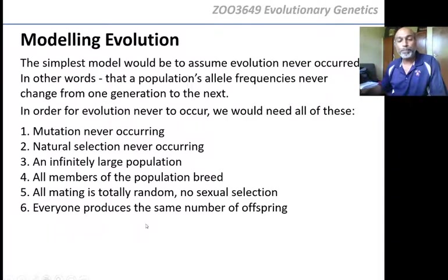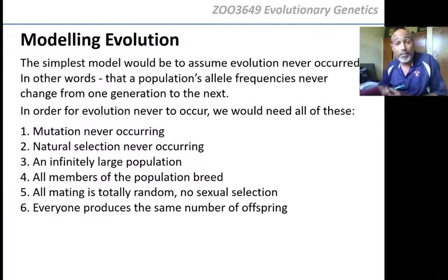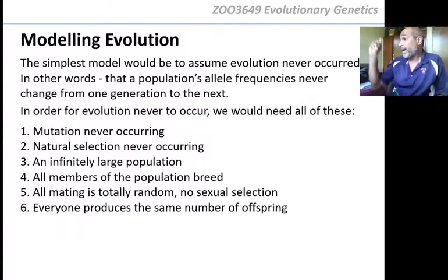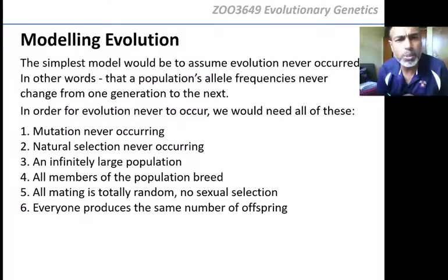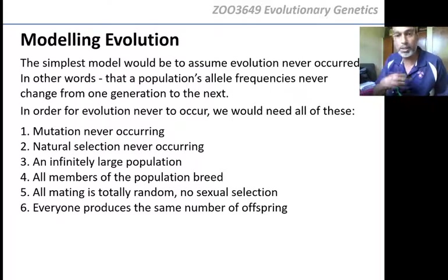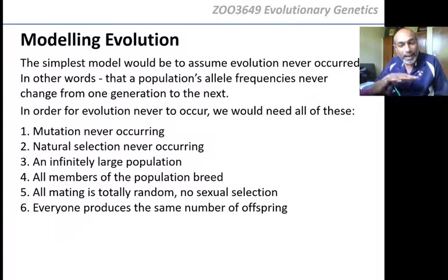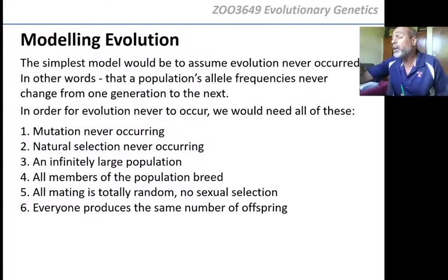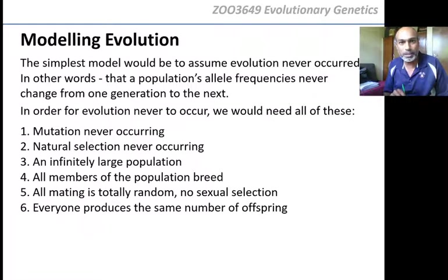What about the number of offspring? If I have one child and you have three children and another person has five children, whose alleles are going to be more in the next generation? The one with five. Unless everybody produces exactly the same number of kids, the ones who produce more kids are going to have more alleles in the next generation. So if you don't have all the same number of kids, the next generation is going to have different allele frequencies.